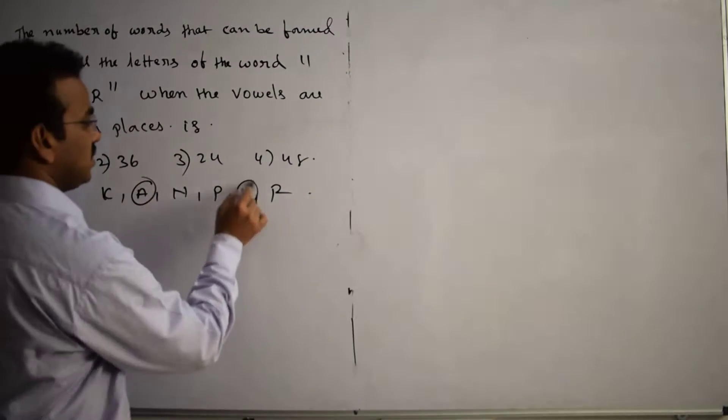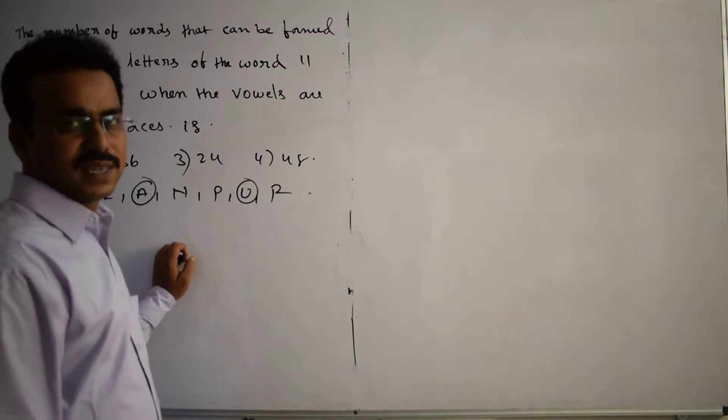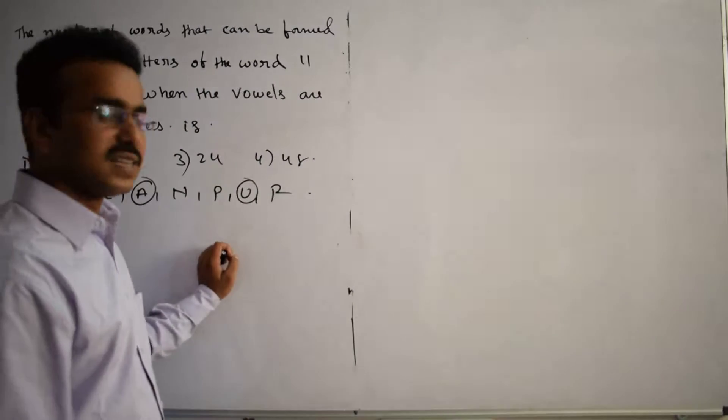Now how many vowels are there? A is a vowel and U is a vowel. Rest of the things are consonants. How many are there? 4 consonants are there. So how many letters are there here? 6 letters are there.